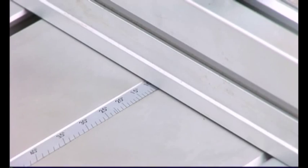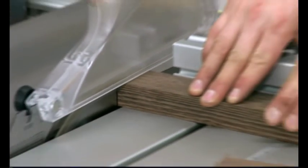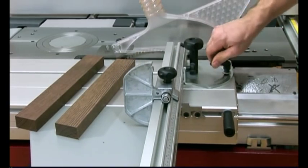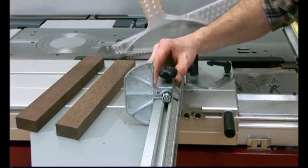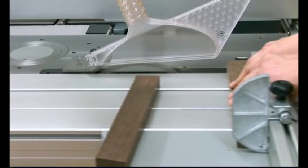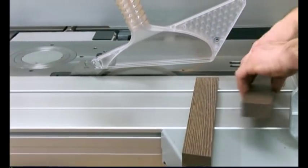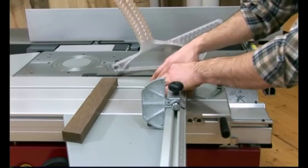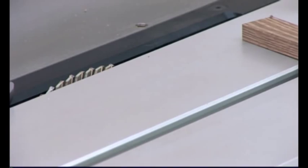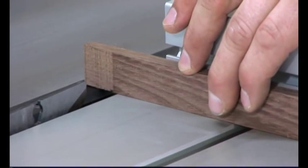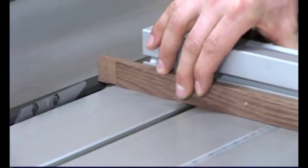Thanks to the user friendliness and precision of the Hammer machines, setting up the machine and then cutting goes extremely quickly. A 90 degree stop and scale that is beveled towards the user ensure a precise and comfortable adjustment of the fence with an excellent level of repeatability. When cutting the back supports to shape, it is very important that the saw is set up accurately. The smooth running sliding table considerably improves the ease with which this is done.